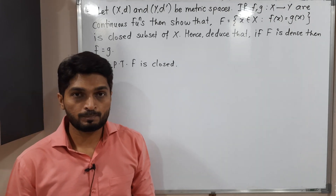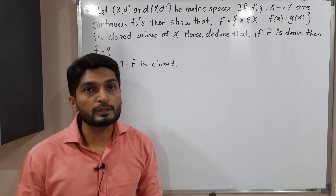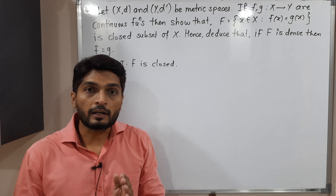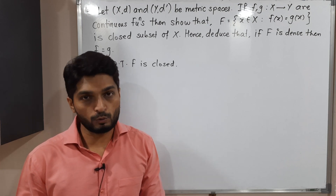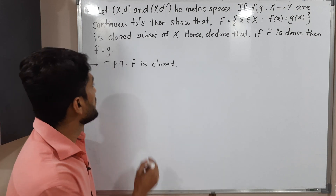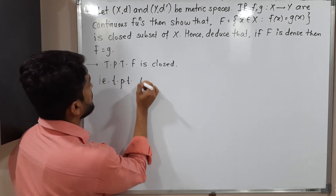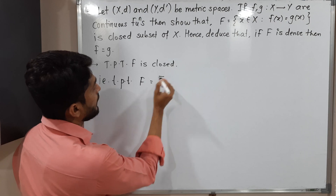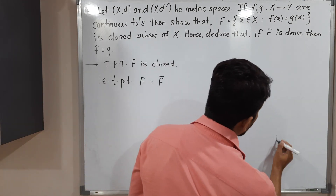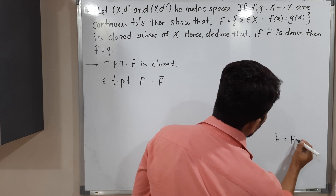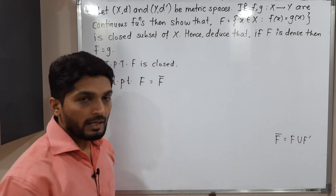How to prove the set F is closed? We can prove its complement is open, or we can prove that F equals F̄ (the closure of F), and then we can say F is closed. So let us take that approach: we want to prove F equals F̄. By definition, F̄ = F ∪ F', where F' is the set of limit points of F.